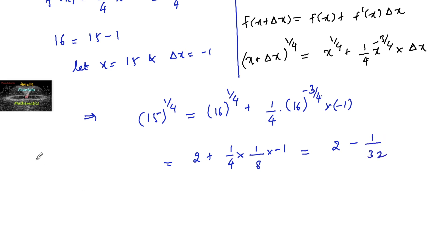Converting 1 upon 32 to decimal: 1 divided by 32 gives 0.03125. So we have 2 minus 0.03125.